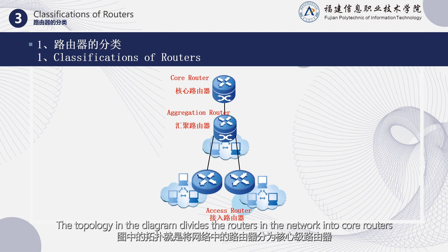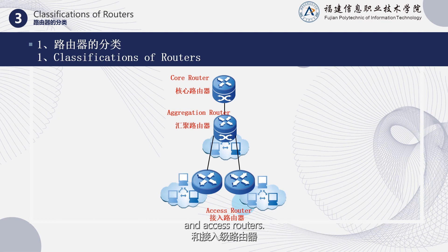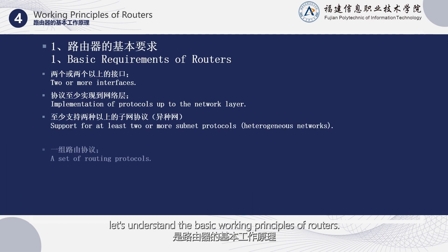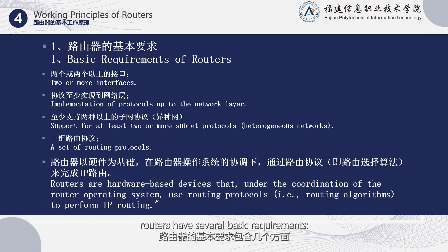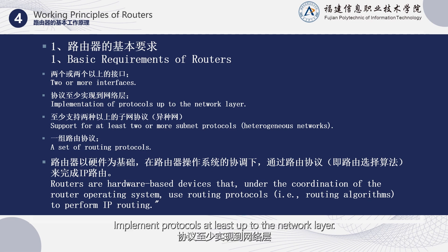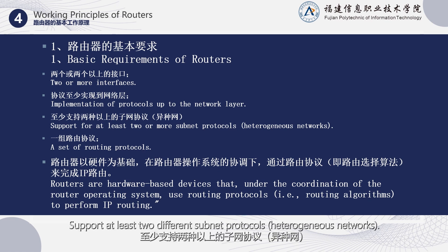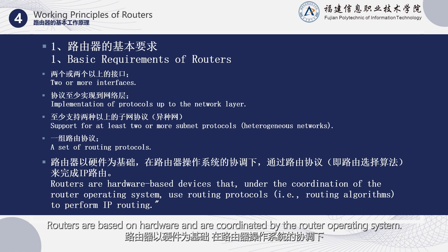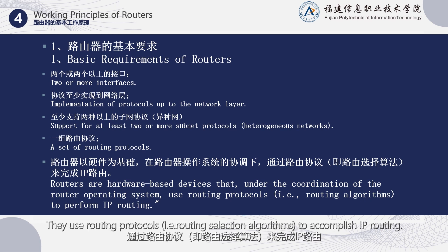The topology in the diagram divides the routers in the network into core routers, aggregation routers, and access routers. Now let's understand the basic working principles of routers. Routers have several basic requirements: have two or more interfaces; implement protocols at least up to the network layer; support at least two different subnet protocols for heterogeneous networks; and have a set of routing protocols. Routers are based on hardware and coordinated by the router operating system, using routing protocols — that is, routing selection algorithms — to accomplish IP routing.